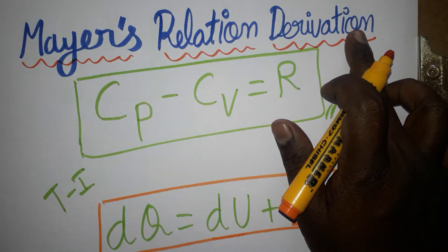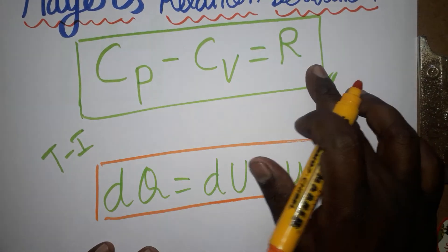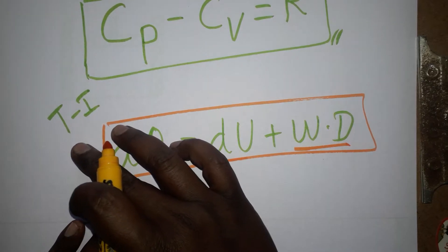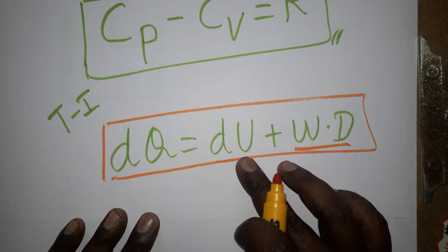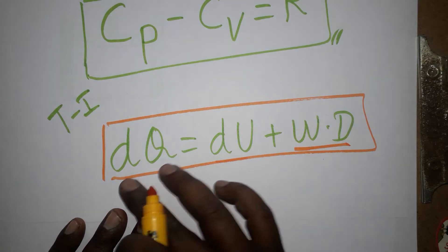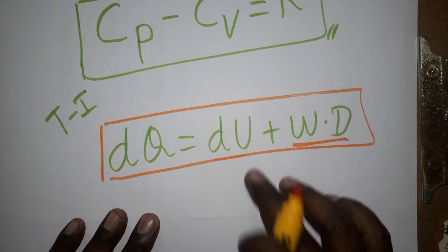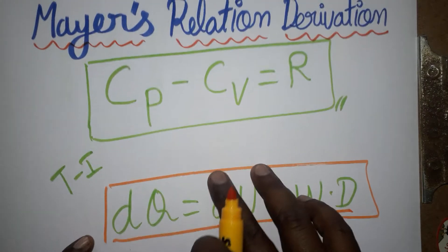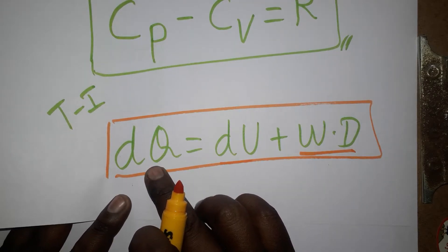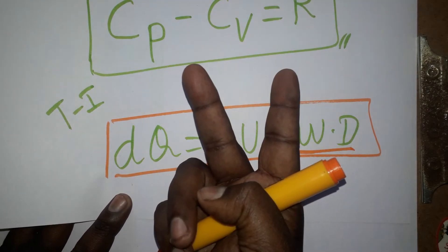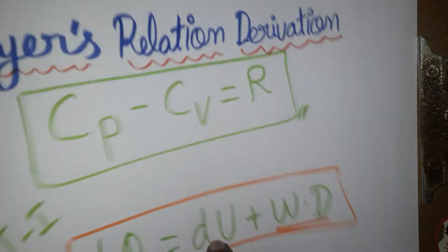Today we are going to learn how to derive Mayer's relation: Cp minus Cv is equal to R. We know thermodynamics first law — the total given energy is internal energy plus work done. First law states that the given heat energy divides into two things: one is the internal energy of the gas, and the other is the work done.